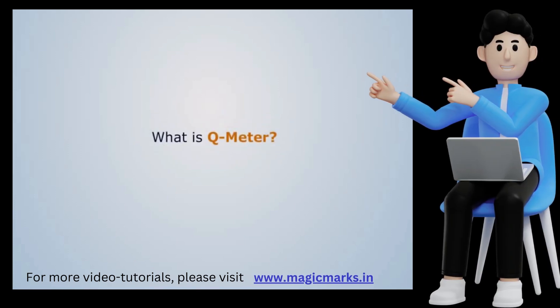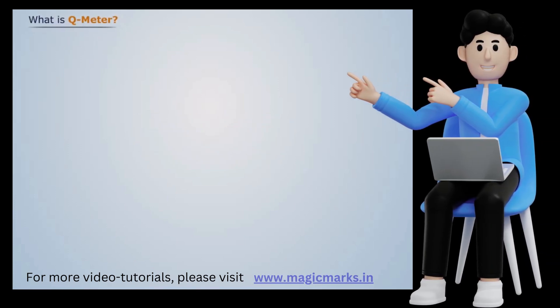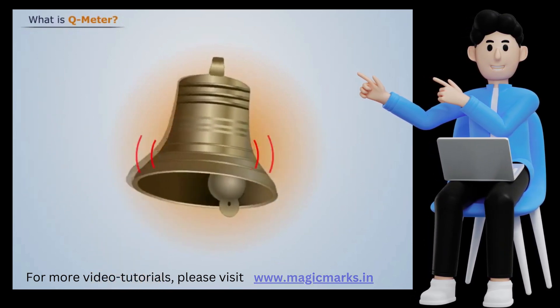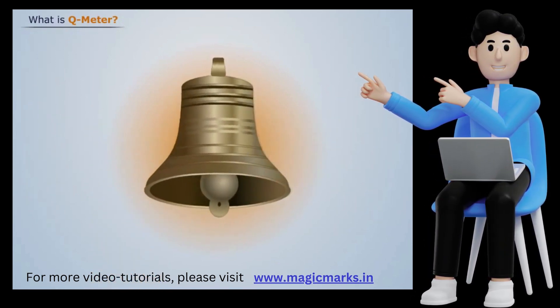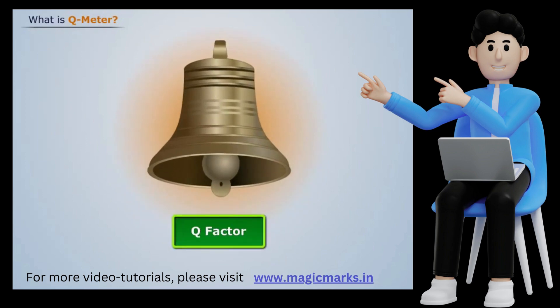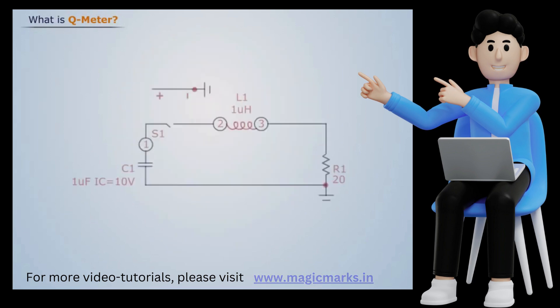What is Q meter? As we have seen, when someone hits a bell it will resonate for several minutes after ringing and will damp or oscillate. We can explain the above example in terms of Q factor.